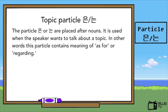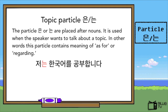Now it is time to learn the particle 은 and 는. The particle 은 and 는 are placed after nouns. It is used when the speaker wants to talk about a topic. In other words, this particle contains a hidden meaning of 'as for' or 'regarding.' For example, 저는 한국어를 공부합니다, which means 'I study Korean.'